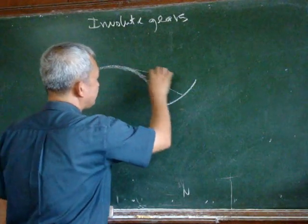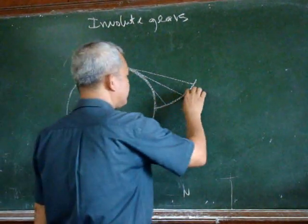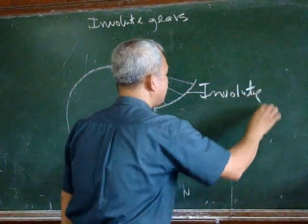And we know that this end of the string will trace a shape which is that of an involute.